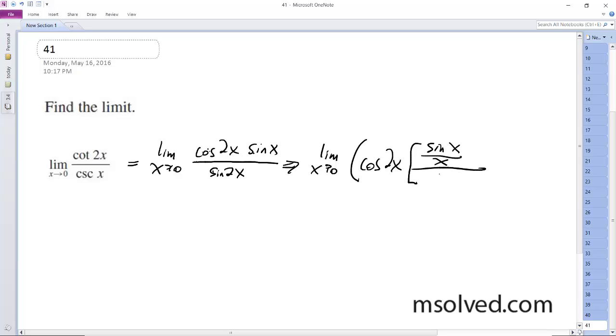and then sine of 2x over x, and this is still the same thing, because the x's can cancel out.